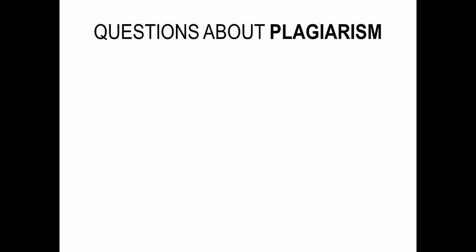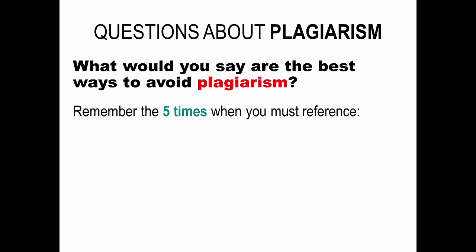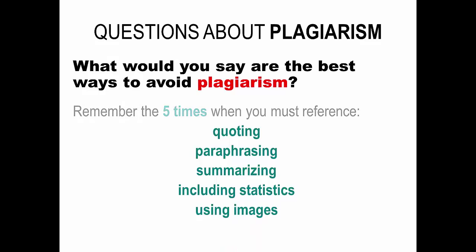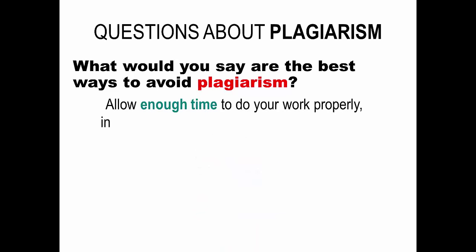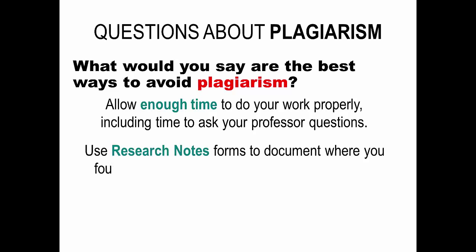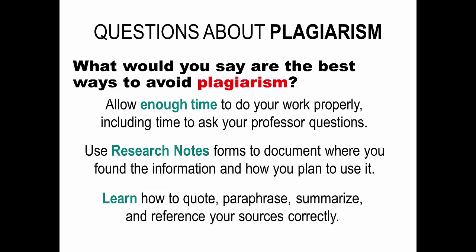I really don't want any problems with plagiarism at college. What would you say are the best ways to avoid plagiarism? Well, first of all, remember the five times when you must reference: quoting, paraphrasing, summarizing, including statistics, and including images. Also, you need to allow enough time to do your work properly, and be sure to allow enough time to ask your professor questions if you have any. Be sure to document your research on a research notes form, indicating where you found the information, the information itself, and your plan for using it. Another way to avoid plagiarism is to make sure you learn how to quote, paraphrase, summarize, and reference correctly.